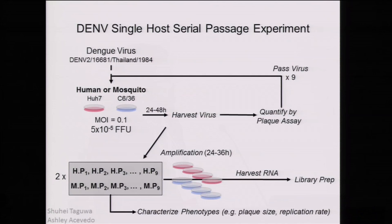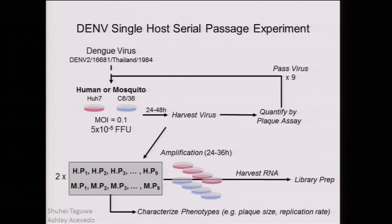Here's the experiment. We take Dengue 2, a common lab serotype, and infect either human or mosquito-derived cell lines—either HUH7, a human hepatoma-derived cell line, or C636, an Aedes albopictus-derived cell line. We infect at low MOI to prevent recombination between different viruses, allow growth in cell culture, quantify it, pass the same inoculum to cells again, and save the rest of the virus for later characterization.